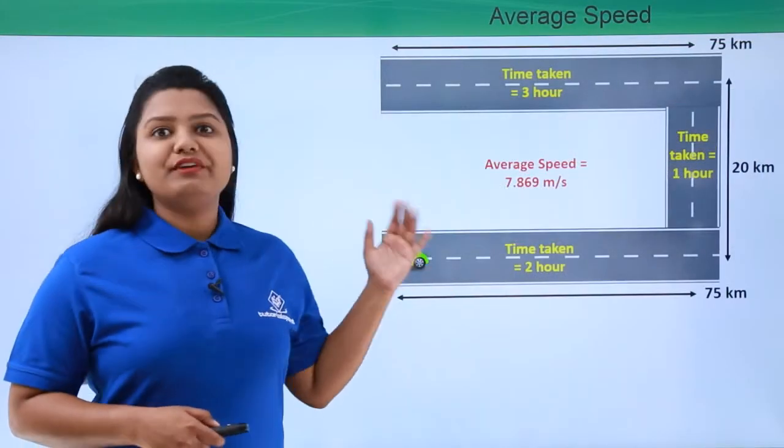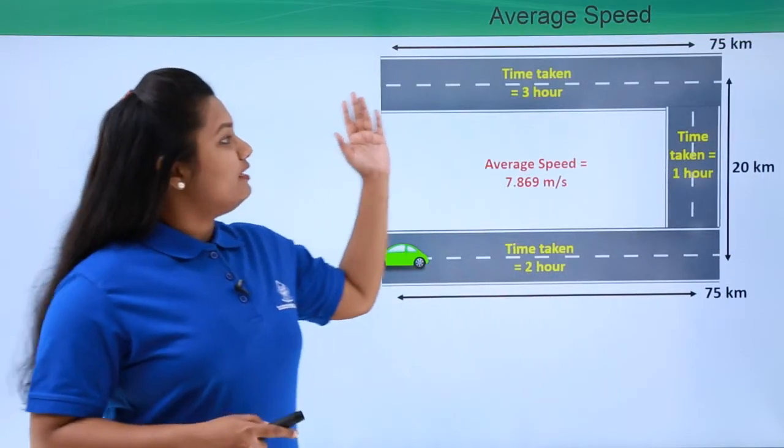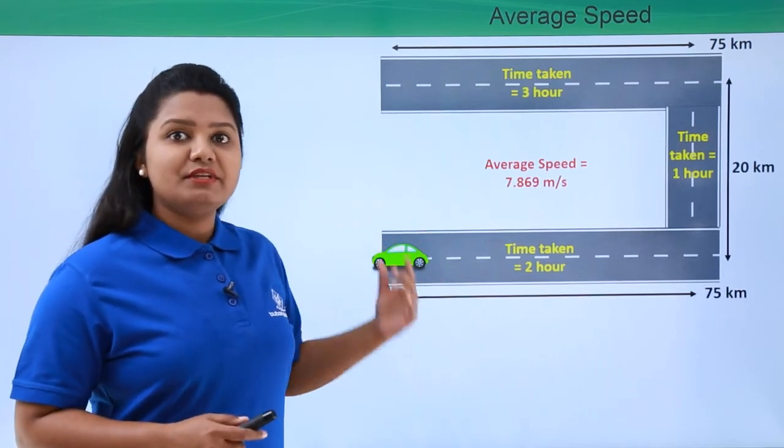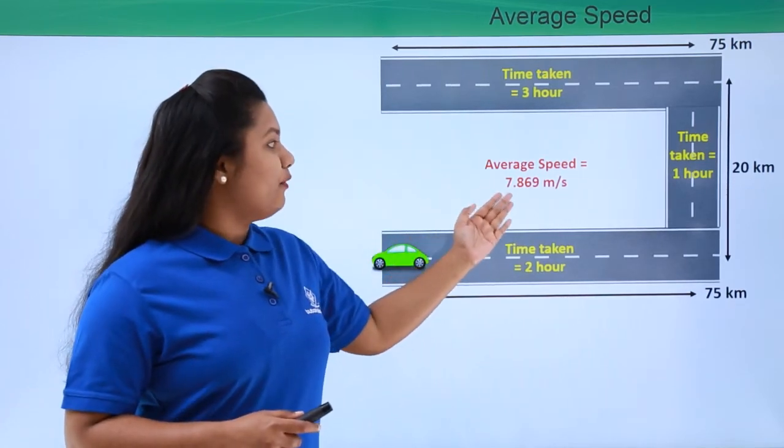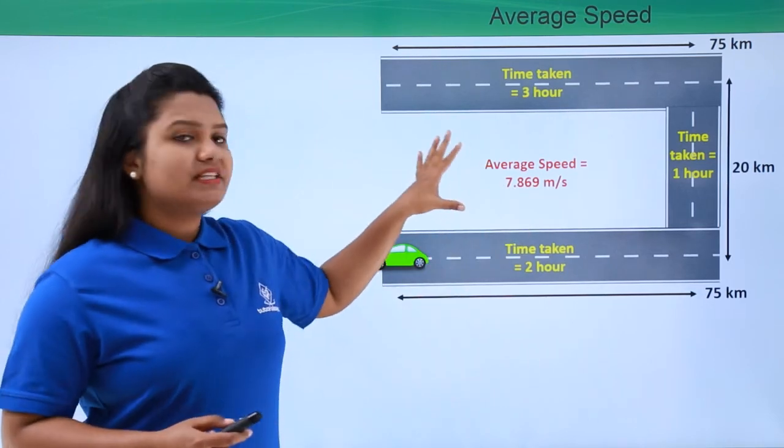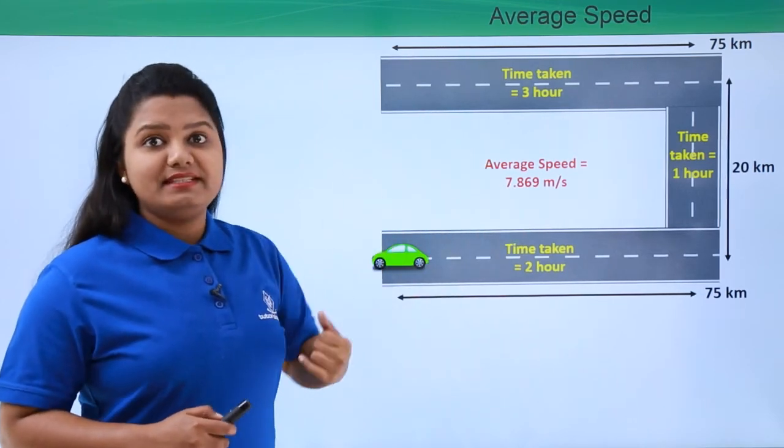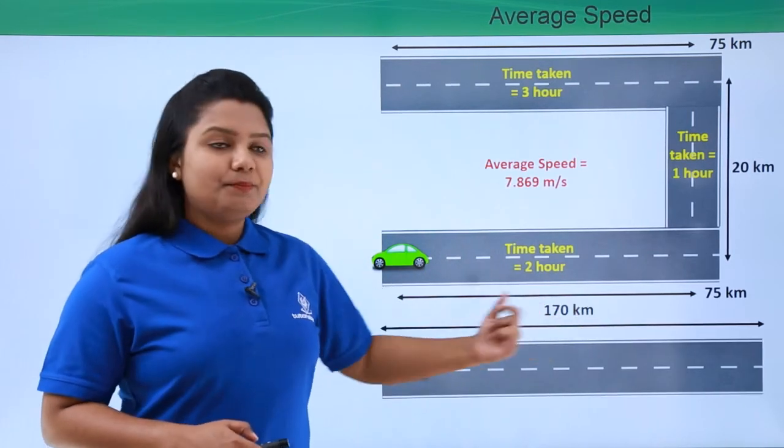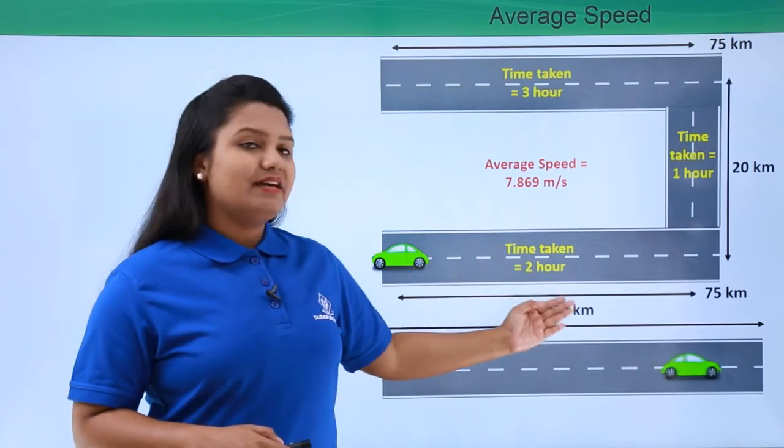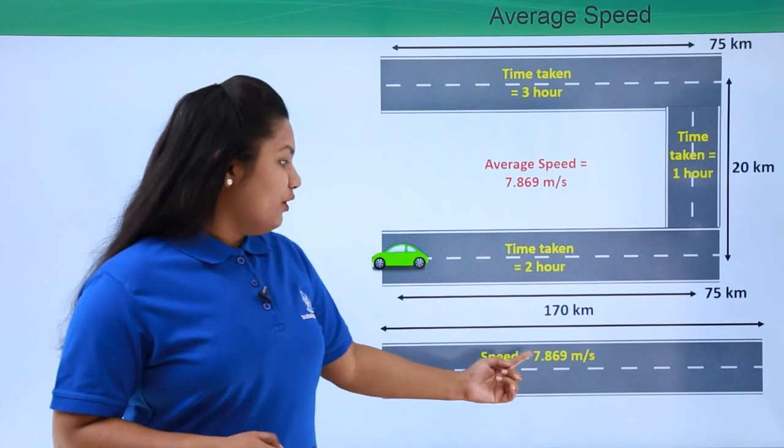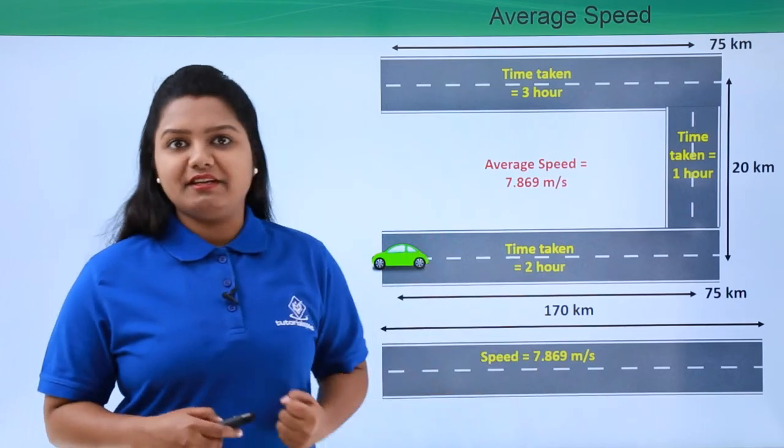So from here we can say that on covering the whole distance, the car has been moving with an average speed of 7.869 meters per second. Now this would essentially mean the same when we say that the car is moving through a straight path of distance 170 kilometers with a speed of 7.869 meters per second.